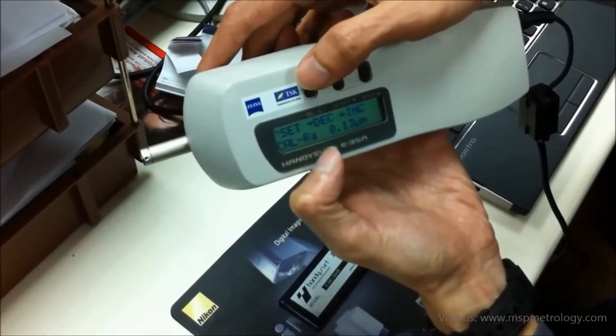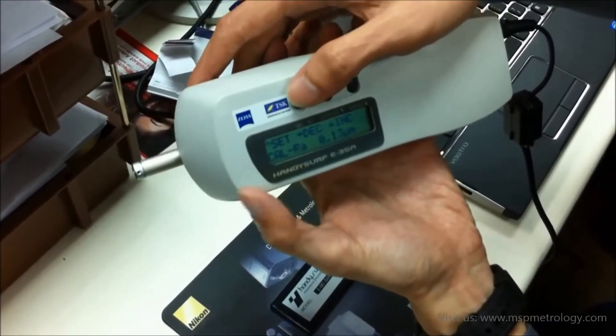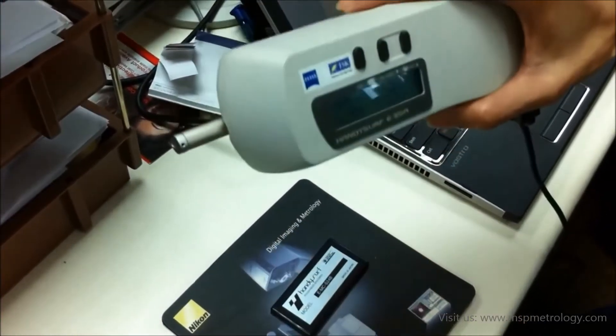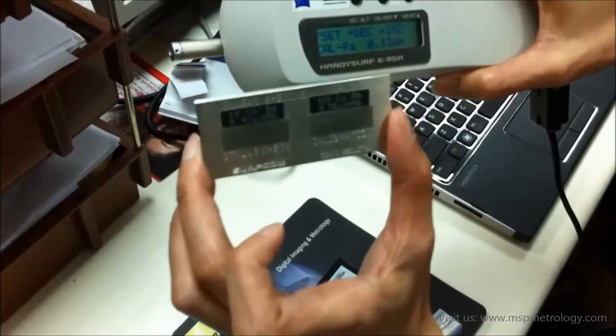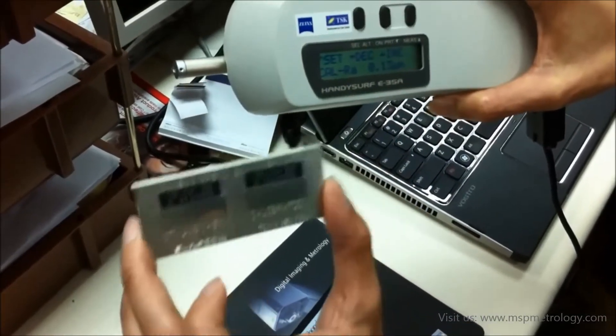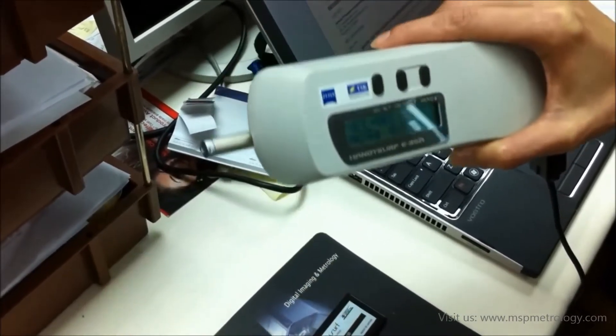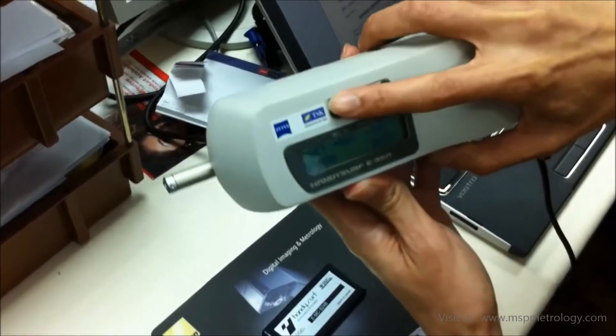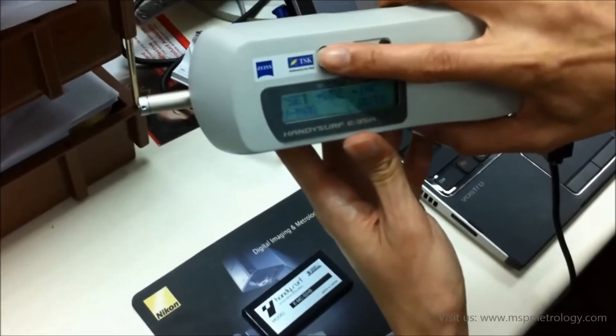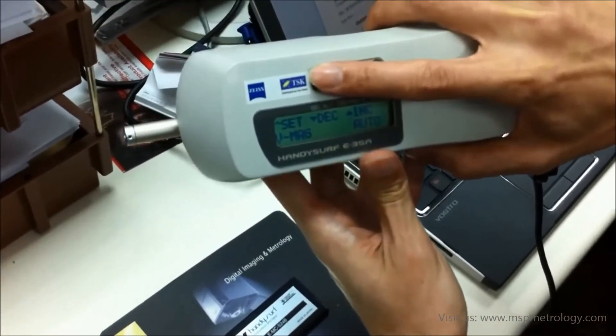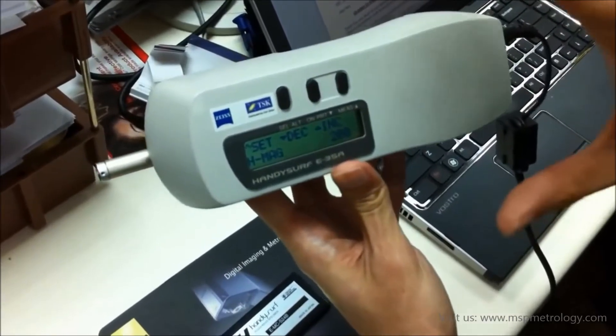You can do a calibration using this method. There's also a calibration test specimen here. If the instrument is not accurate, you calibrate it against the specimen. You can also do magnification, vertical and horizontal, to magnify areas that are too small to see.